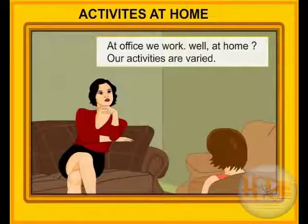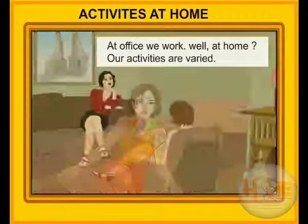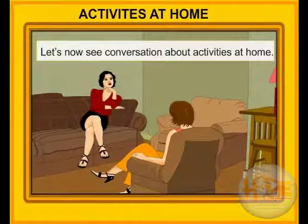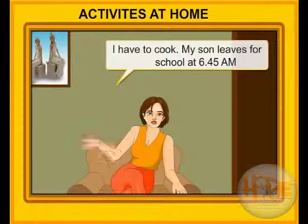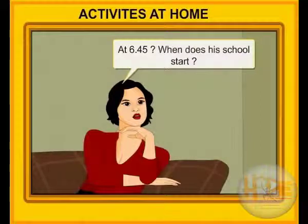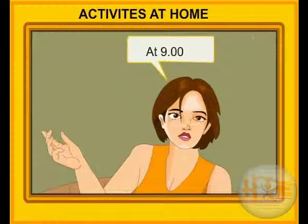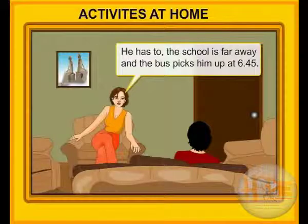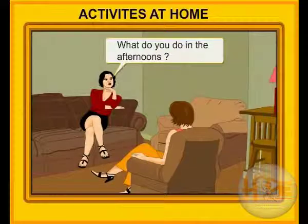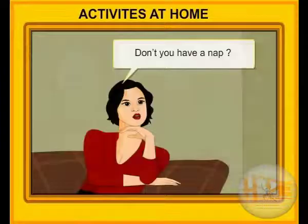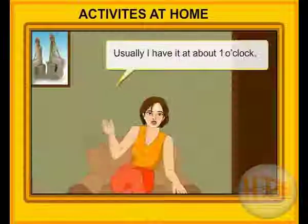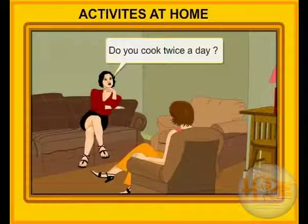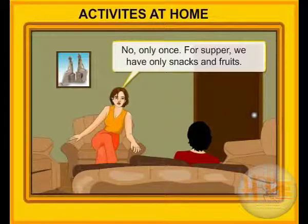Activities at home. At office we work, but at home our activities are varied. Conversation: Normally, when do you get up? At five. Why do you get up so early? I have to cook. My son leaves for school at 6:45 a.m. At 6:45? When does his school start? At nine. Then why does he leave so early? He has to — the school is far away and the bus picks him up at 6:45. When does he return? By five. What do you do in the afternoons? I read books or watch TV. Don't you have a nap? No, I don't — if I do, I get a headache. When do you have your lunch? Usually about one o'clock. Do you cook twice a day? No, only once. For supper we have only snacks and fruits.